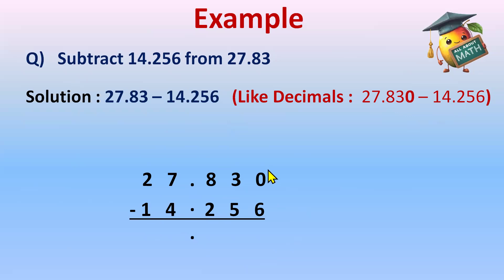Now 0 minus 6 again is not possible. So 0 will borrow 1 from 3 and will become 10, and 3 will become 2 because it has given 1 to this 0. Now 10 minus 6 is 4.